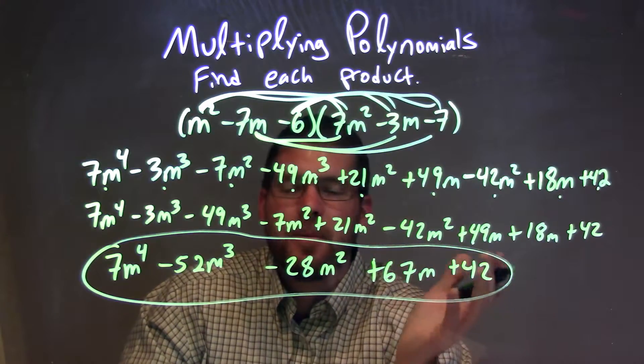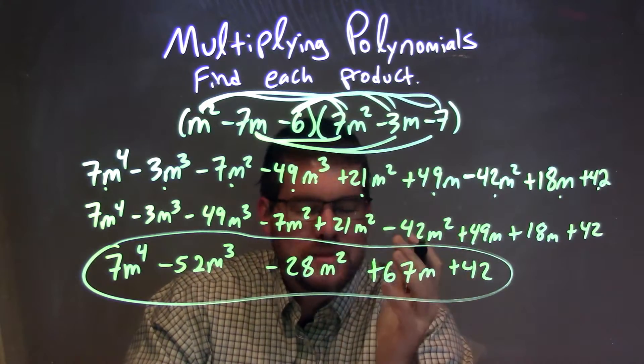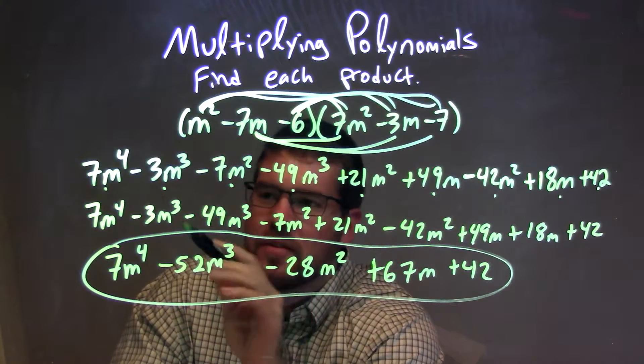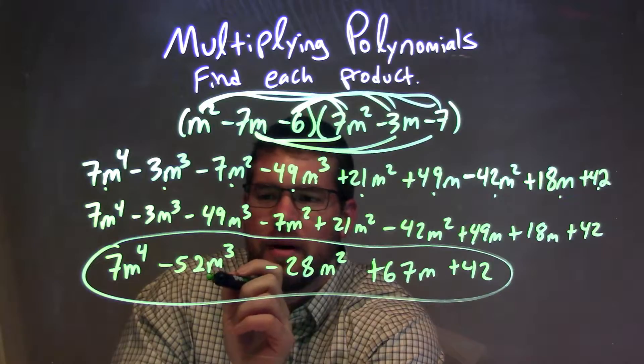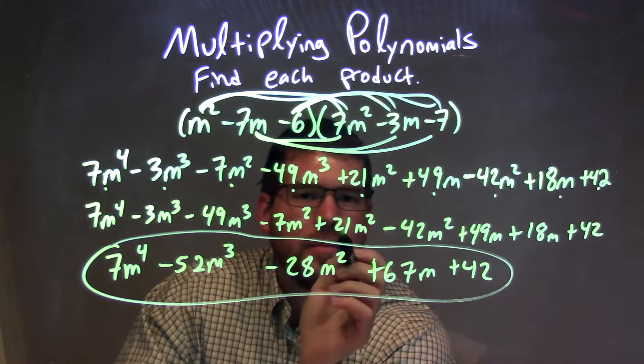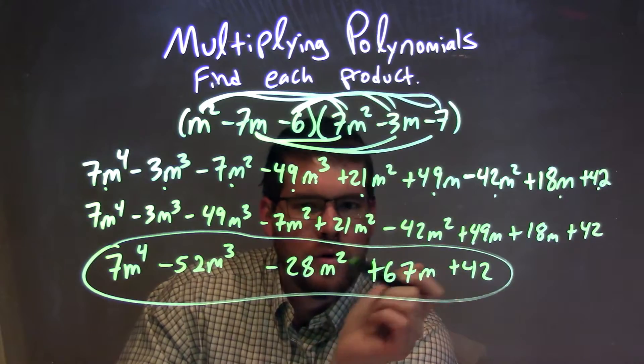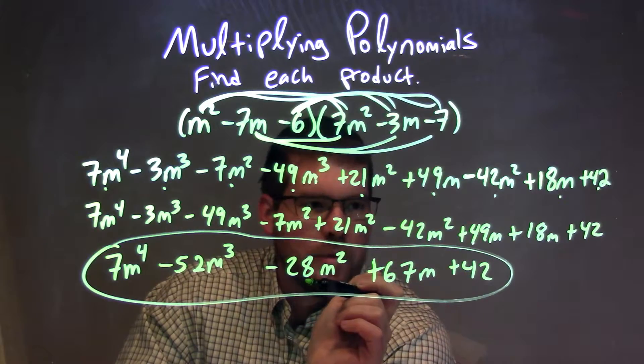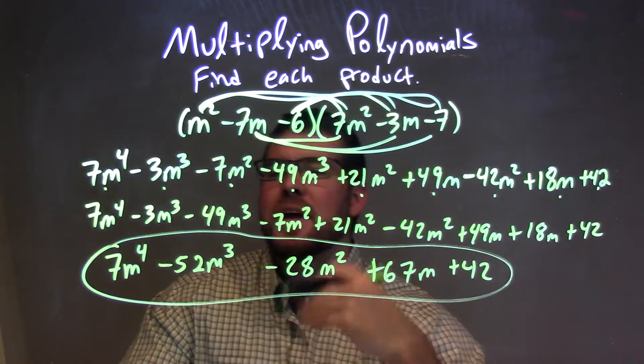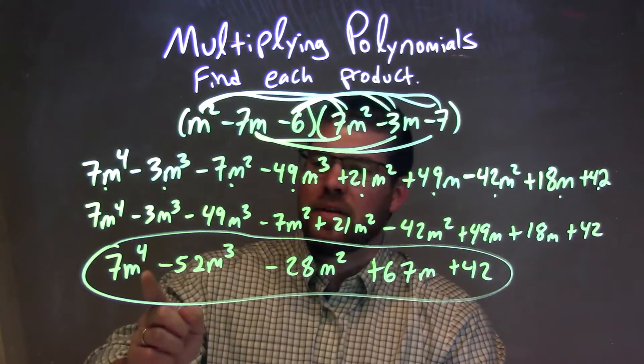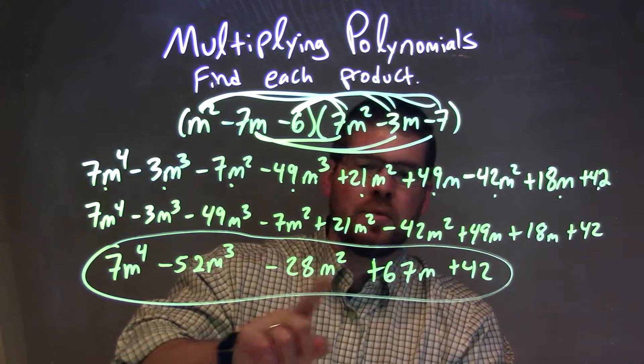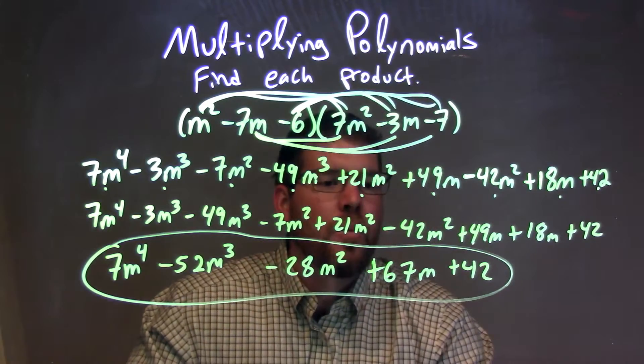We put our like terms next to each other with our highest degrees first. When we combine then, minus 3m to the third minus 49m to the third is minus 52m to the third, and our other like terms was minus 7m squared plus 21m squared minus 42m squared which is minus 28m squared, and then 49m plus 18m was 67m, giving us our final answer of 7m to the fourth minus 52m to the third minus 28m squared plus 67m plus 42.